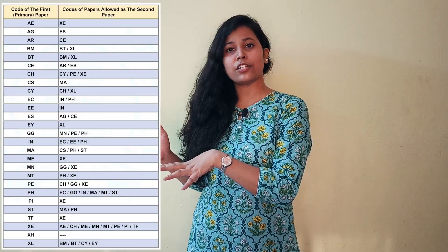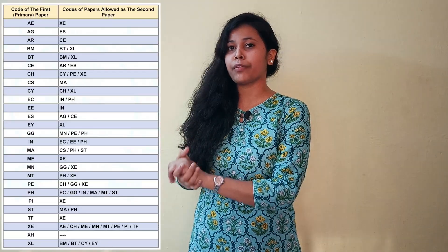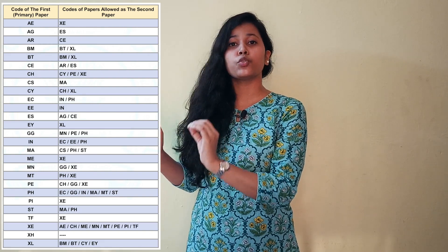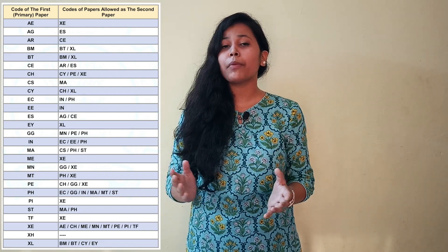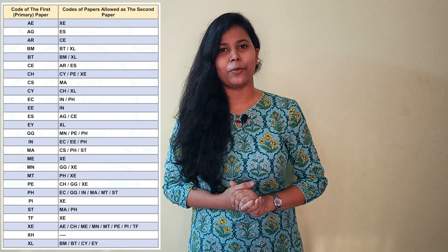Here you can see the predefined list of combinations of papers. The combination you choose must be from these only — other combinations are not allowed. Whether you choose one or two GATE papers is totally your call. Candidates opting for two GATE papers must have a primary choice of paper as their default choice. The good thing is that even if you appear for two GATE papers, you just need to fill one application form.